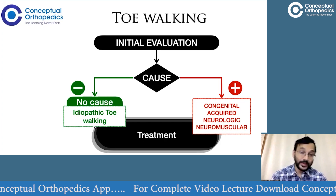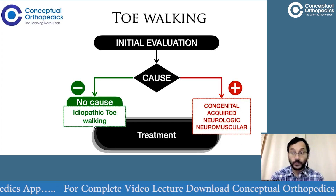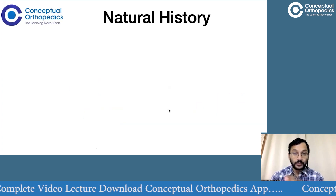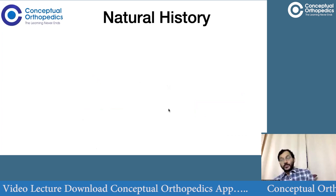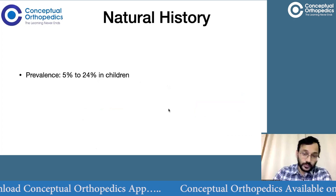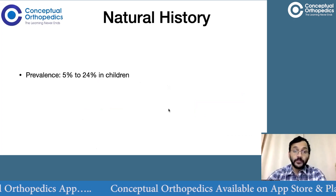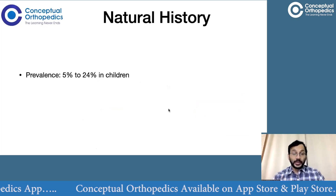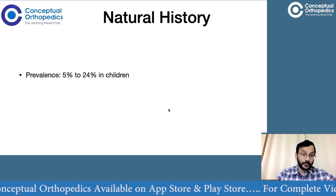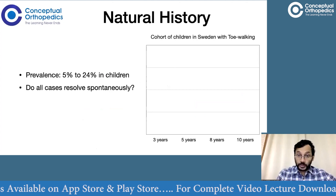Irrespective of whether it's idiopathic toe walking or toe walking due to any other reason, the treatment would be more or less the same. Regarding natural history, about 5 to 25% of all children suffer from idiopathic toe walking. A large study done in Sweden examined a cohort of around 1,500 children and found that about 75 children had toe walking or had ever complained of toe walking at three years of age.